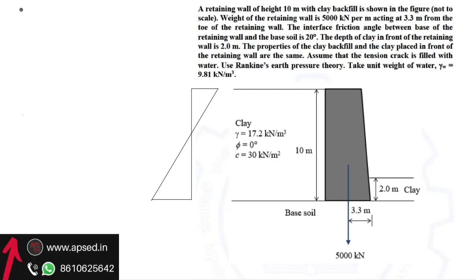In this video, let's see a question from GATE 2021 from the soil mechanics topic — specifically from retaining wall or earth pressure. The question says: a retaining wall of height 10 meters with clay backfill is shown in the figure. The weight of the retaining wall is 5000 kilonewton per meter.